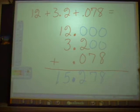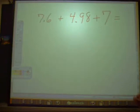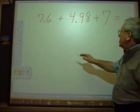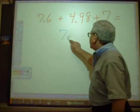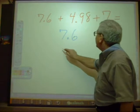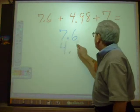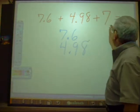Let's try another example. So let's try another typical example. Seven point six plus four point nine eight plus seven. So I start out, I line up the decimal points. I'm going to do it vertically. I have four point nine eight.